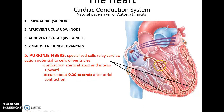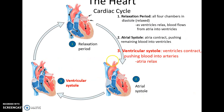The cardiac cycle is the actual beating of the heart. It starts with the relaxation period when the entire heart is relaxed, followed by atrial systole when the atria contract and push blood into the ventricles, and then ventricular systole when the atria relax and the ventricles contract, sending blood into the arteries. Then the cycle repeats continuously.